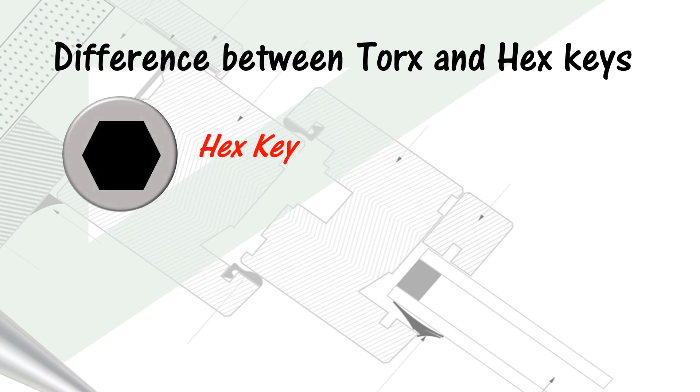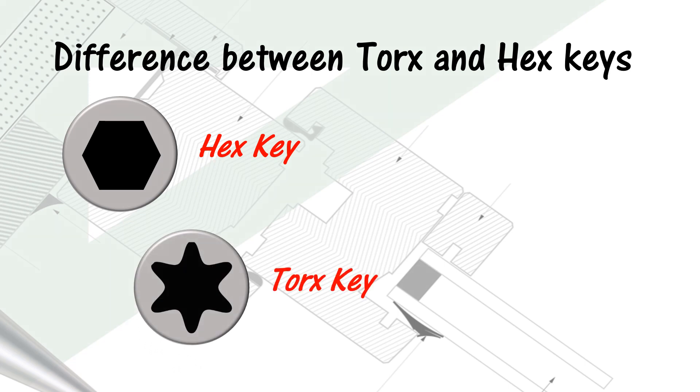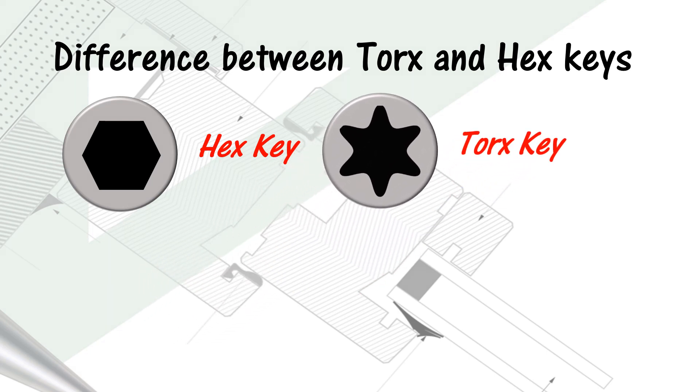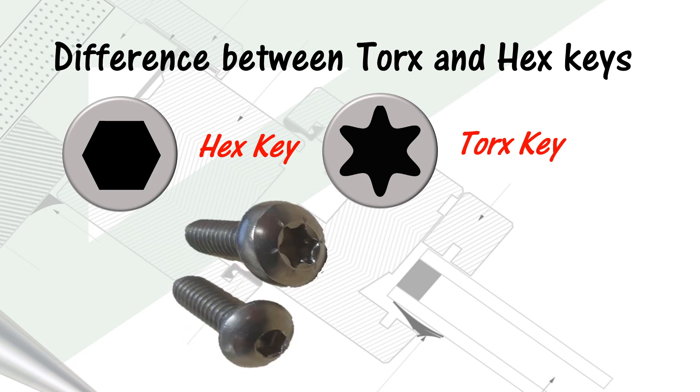So the main difference is, instead of a hexagon shape, on the head of a Torx key, there is a six-pointed star-like shape. This star-like shape and, on an Allen key, the hexagonal shape, because it is lower than the surface of the screw head, this is called an indent or a recess.